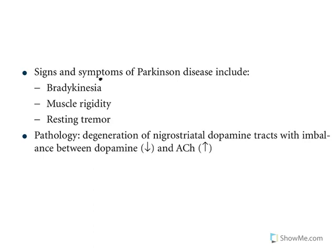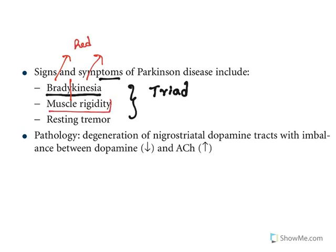The signs and symptoms of Parkinson's disease are known as the triad of Parkinson's symptoms. First, bradykinesia — kinesia means movement, brady means reduced — that literally means reduced movements. Second, muscle rigidity — muscles will get rigid. Third, resting tremors — when people are at rest, tremor means shaking; the hands and limbs will shiver or shake. That is known as resting tremor. All these are because of nigrostriatal pathway degeneration.